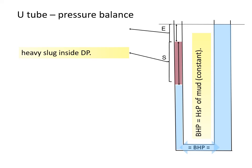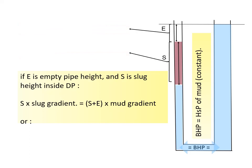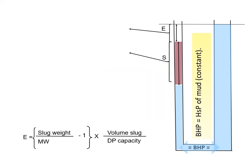If we pumped heavy slug inside drill pipe, it will drop below the surface level since it's heavier, creating empty pipe at the top. If E is empty pipe height and S is slug height inside the drill pipe, then the following relation applies. S multiplied by slug gradient will be equal to the sum of S plus E multiplied by mud gradient. Or slug weight divided by mud weight minus 1, multiplied by slug volume over DP capacity is equal to empty pipe height.